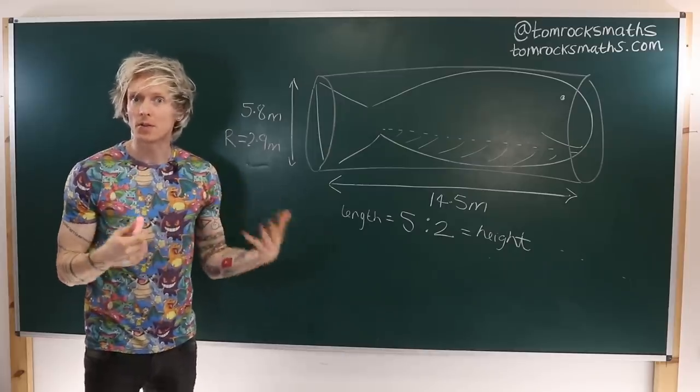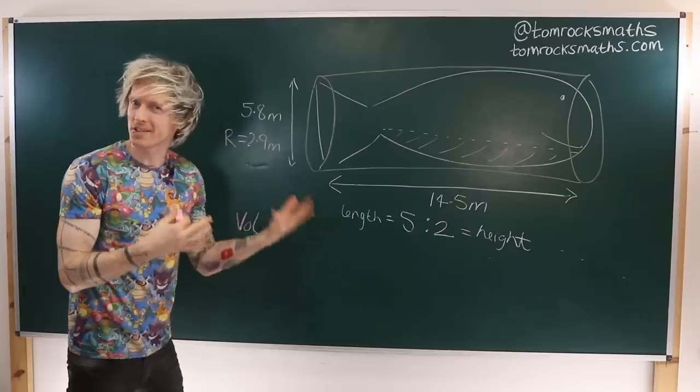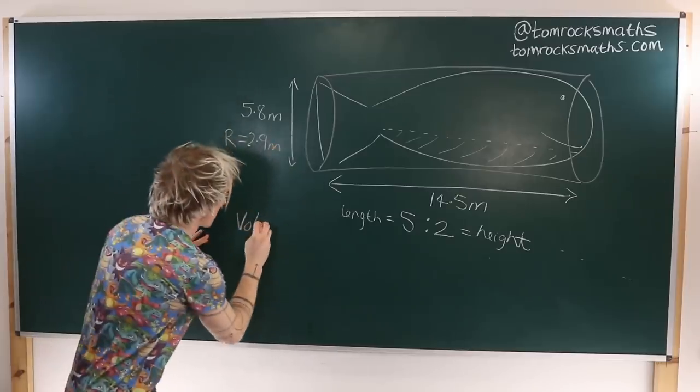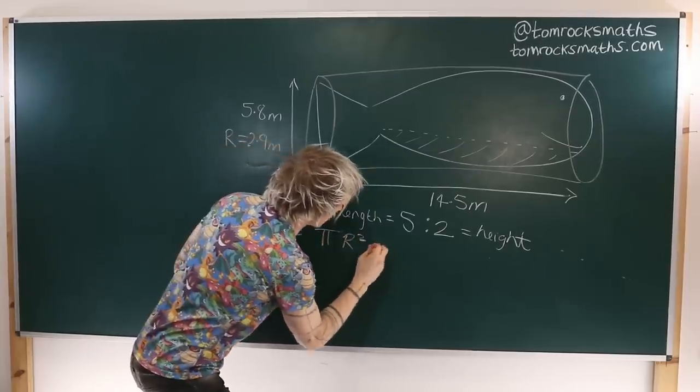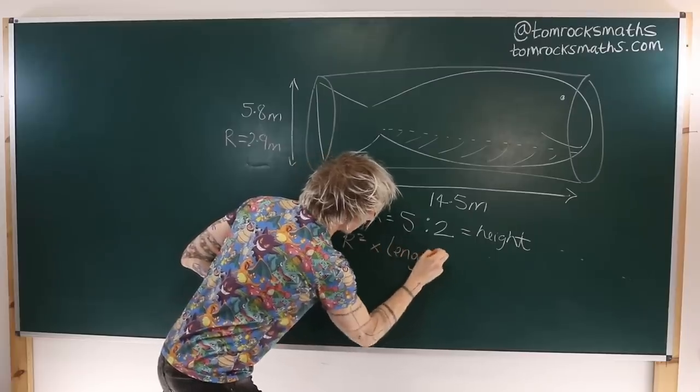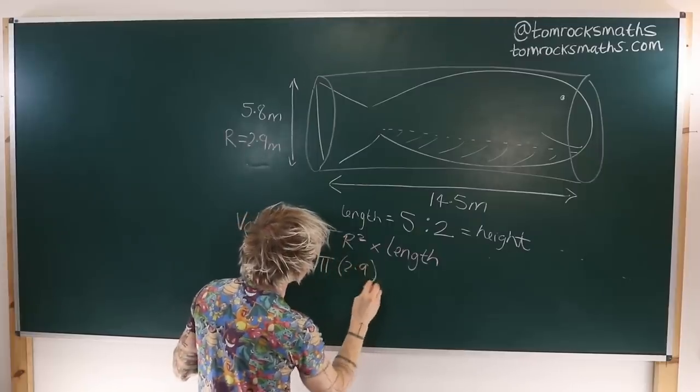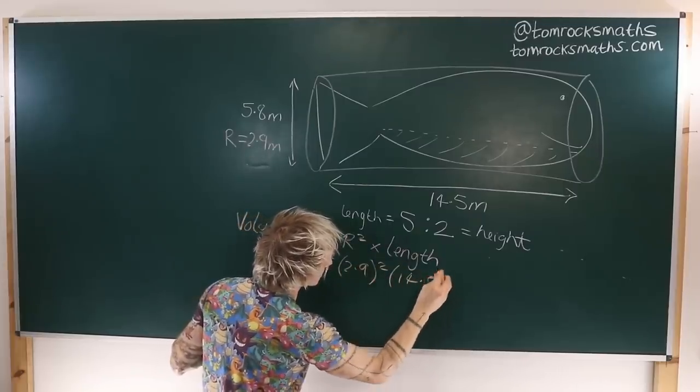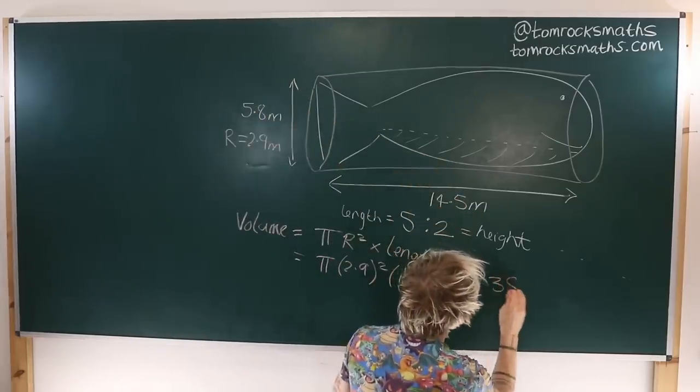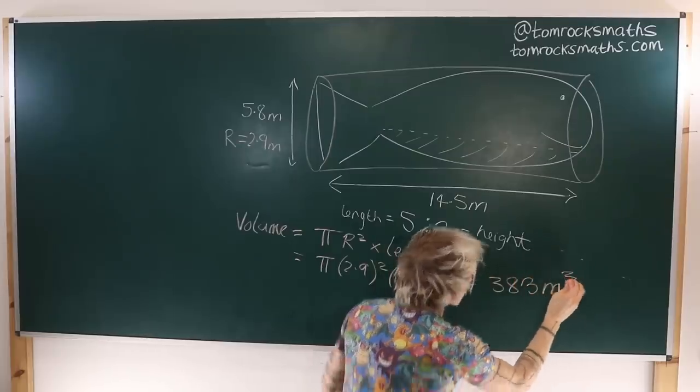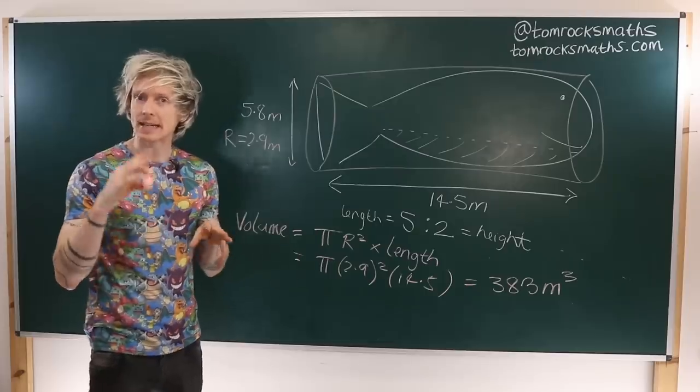So this means we can calculate the volume. So the volume of a cylinder, and in this case the volume or the approximate volume of our Pokemon Wailord, is going to be equal to π times the radius squared times, in our instance here, the length. So this is going to be π times 2.9 squared multiplied by 14.5. And when you plug those numbers in, you'll get a volume of 383 meters cubed. Now remember, the weight of Wailord is given as 398 kilograms.